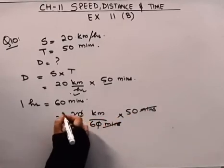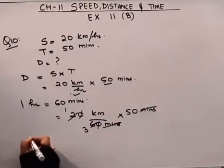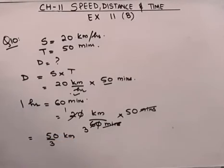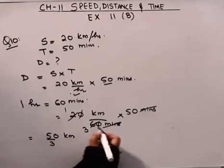20 divided by 2 is 10, 60 divided by 2 is 30. 2 times 3 is 6. So this will be 50 km by 3, which is 50 by 3 km.